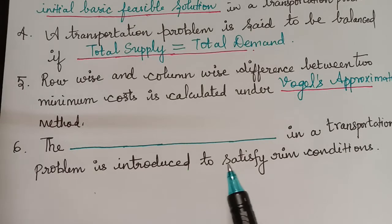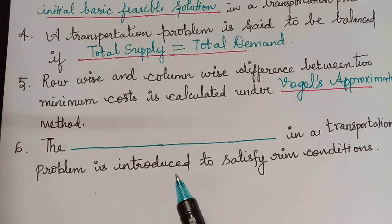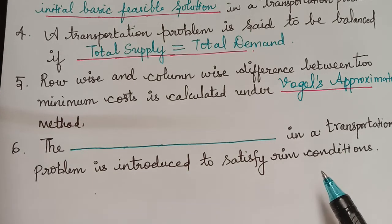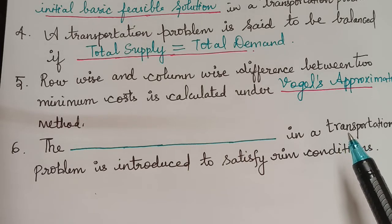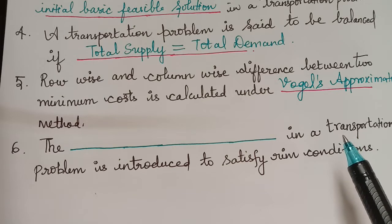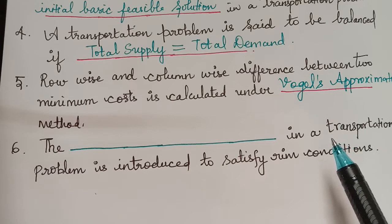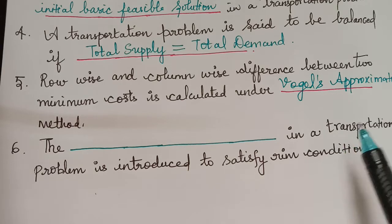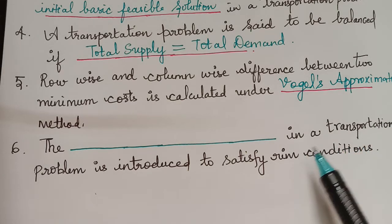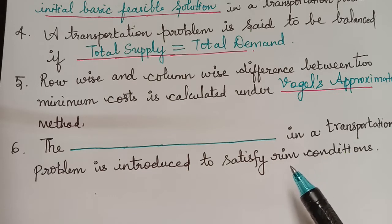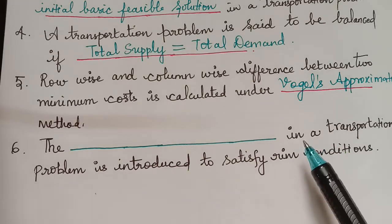The next question is: the dash in a transportation problem is introduced to satisfy the rim conditions. The rim conditions relate to total supply and total demand being equal. If they are not equal, it is an unbalanced transportation problem, and we introduce a dummy source or a dummy destination to make them equal and satisfy the rim conditions.